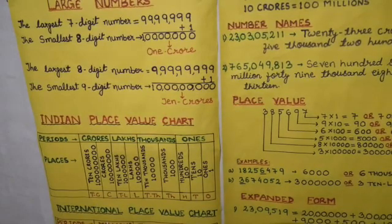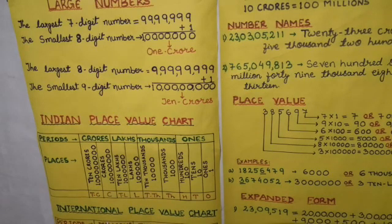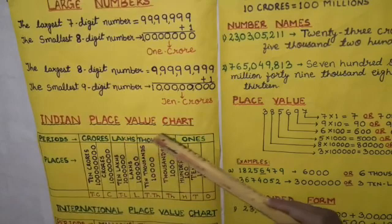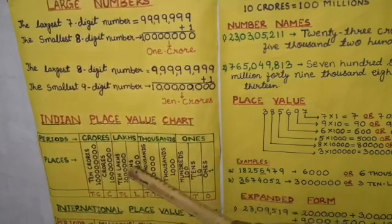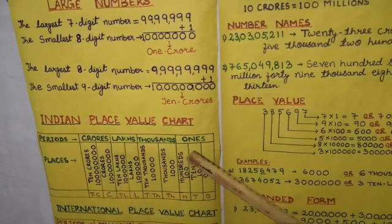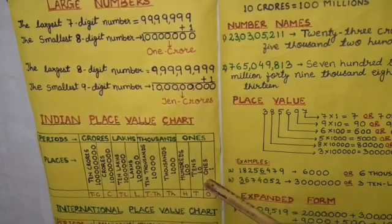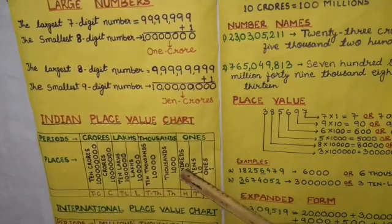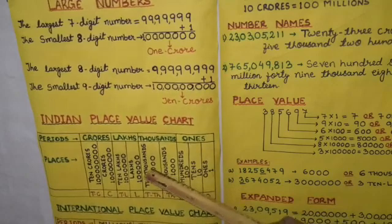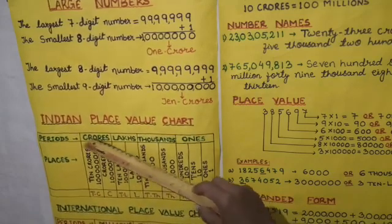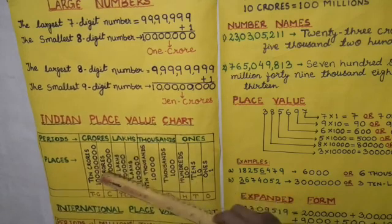Now there are two ways to express a number: the Indian place value system and the international place value system. In the Indian place value chart, the 9 places are grouped into four periods — ones, thousands, lakhs, and crores. The ones period has three places: ones, tens, hundreds. The thousands period has two places: thousands and ten thousands. The lakhs period has two places: lakhs and ten lakhs. Similarly, the crores period has two places: crores and ten crores.